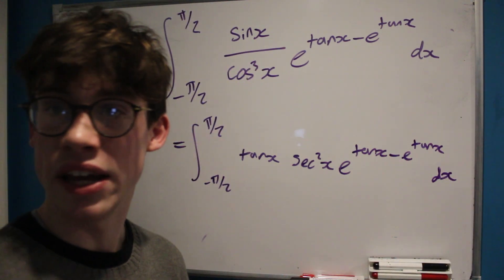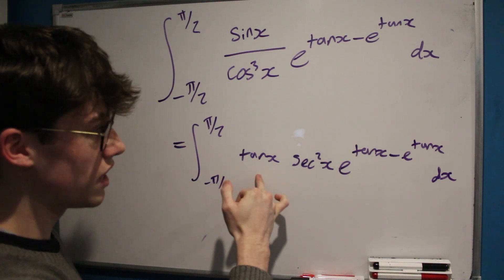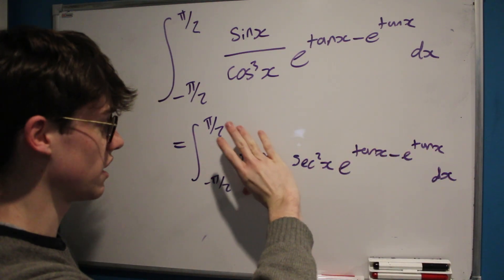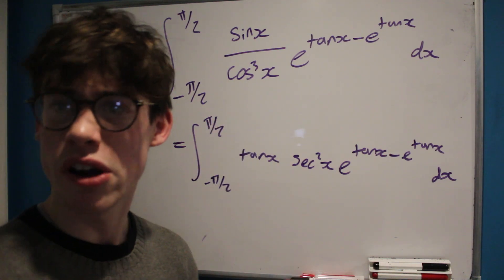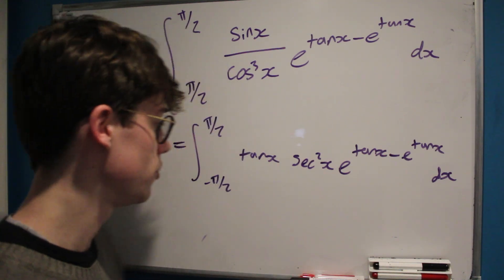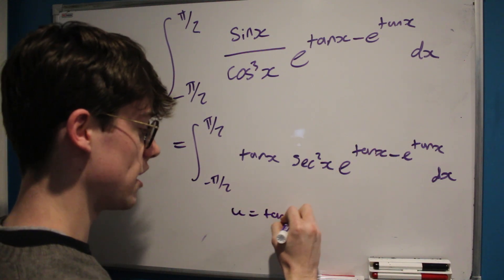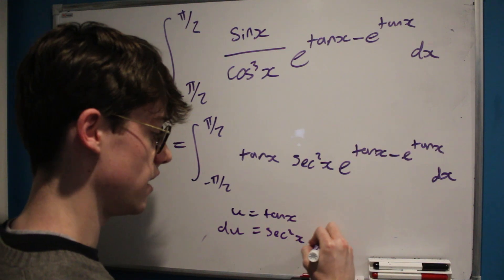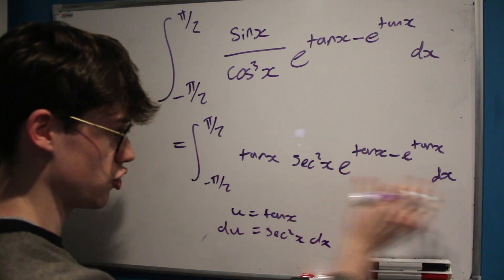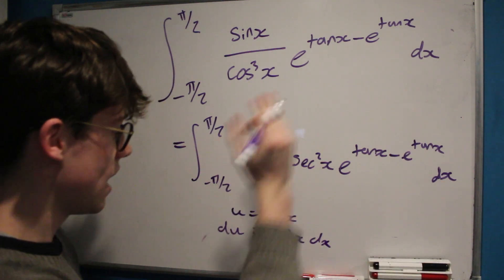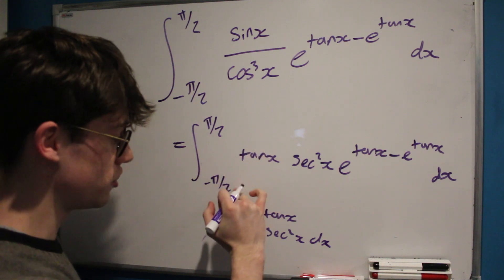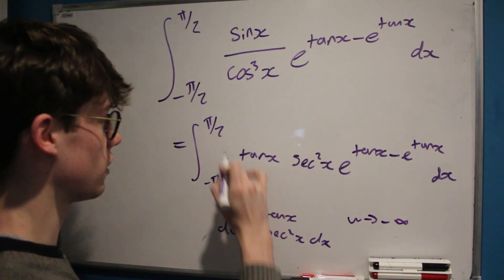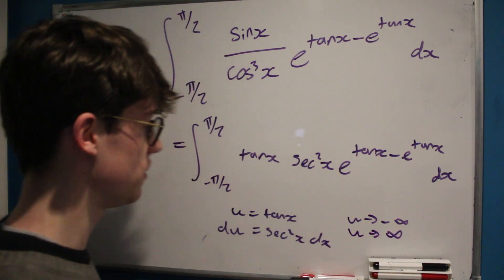Now that we've written our integral in a different way, we can see we've got a tan x here, a tan x here, a tan x here, and a sec squared x here, and bounds of negative pi over 2 and pi over 2 — so it's just asking us to make the substitution u equals tan x. That's because du will equal sec squared x dx, so we have our differential part already taken care of. As x approaches negative pi over 2, u will approach negative infinity, and as x approaches pi over 2, u will approach infinity.